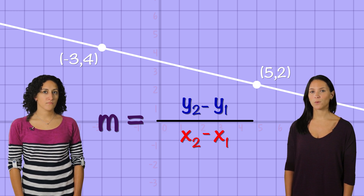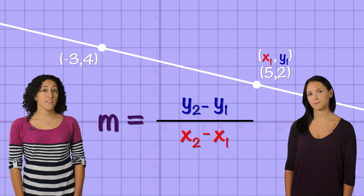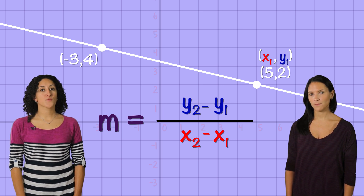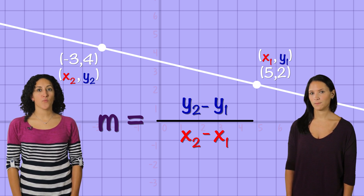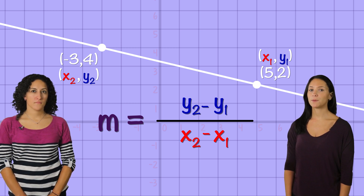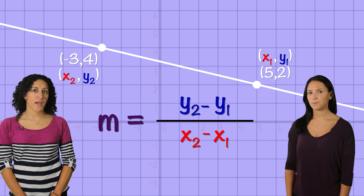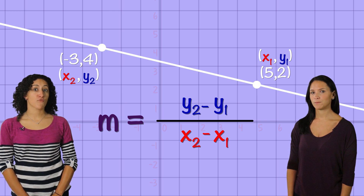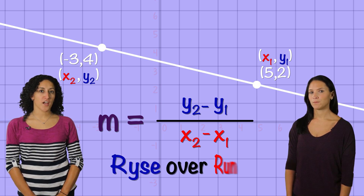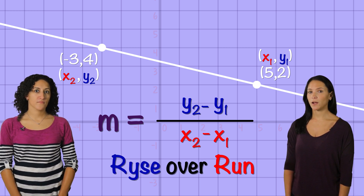First, let's label our coordinates. These first coordinates will be x1 and y1. And these second coordinates will be x2 and y2. Now let's substitute our numbers. Be sure to keep everything in the proper order: y2 minus y1 on top. Remember, rise over run. Then x2 minus x1 on the bottom.